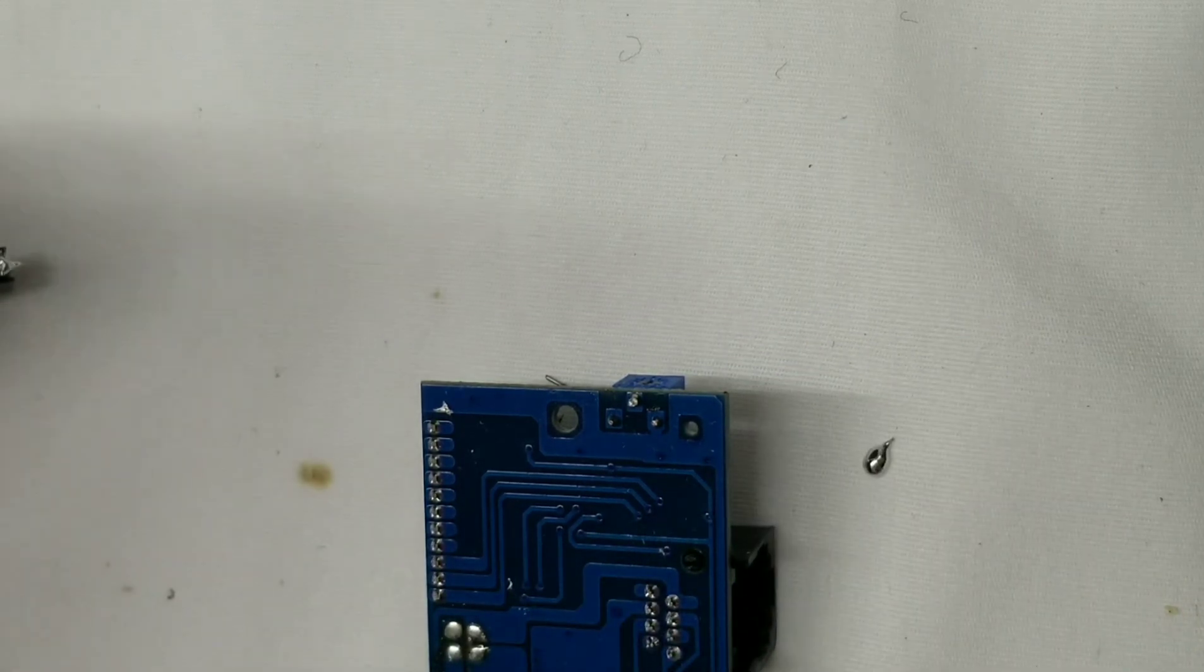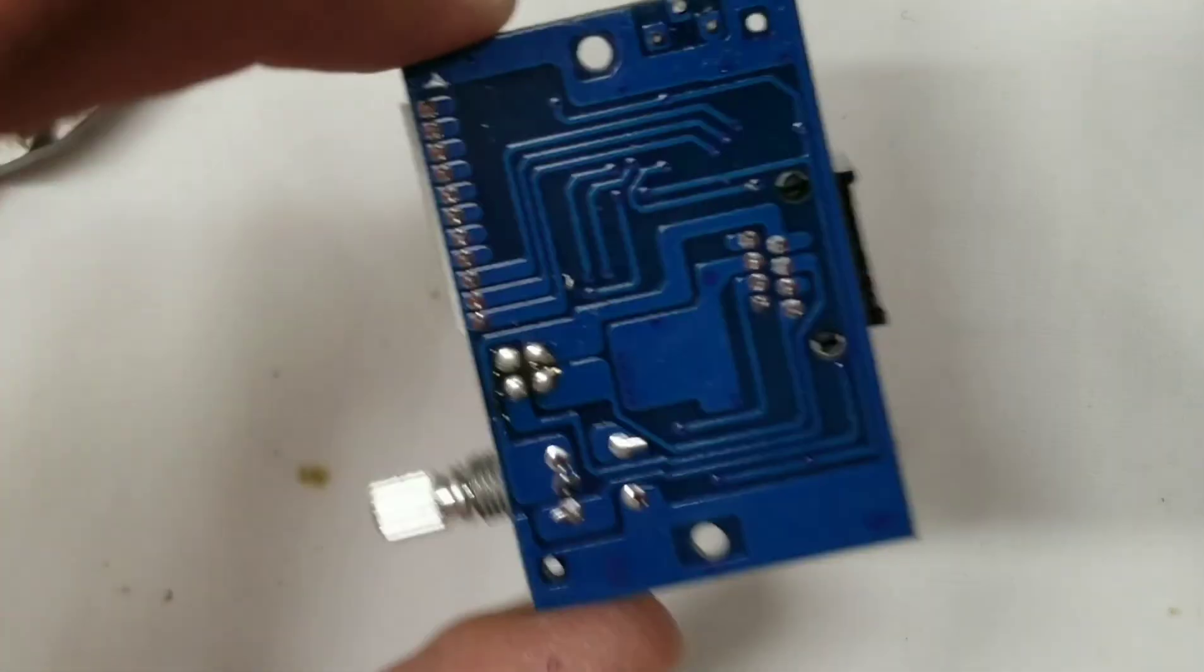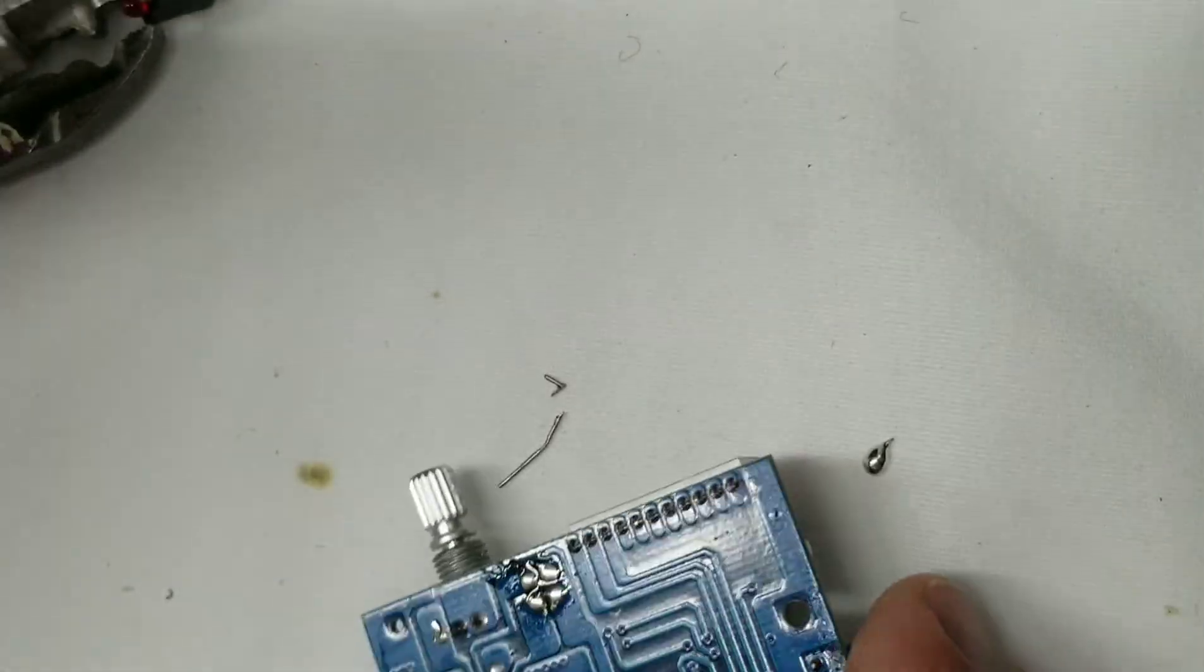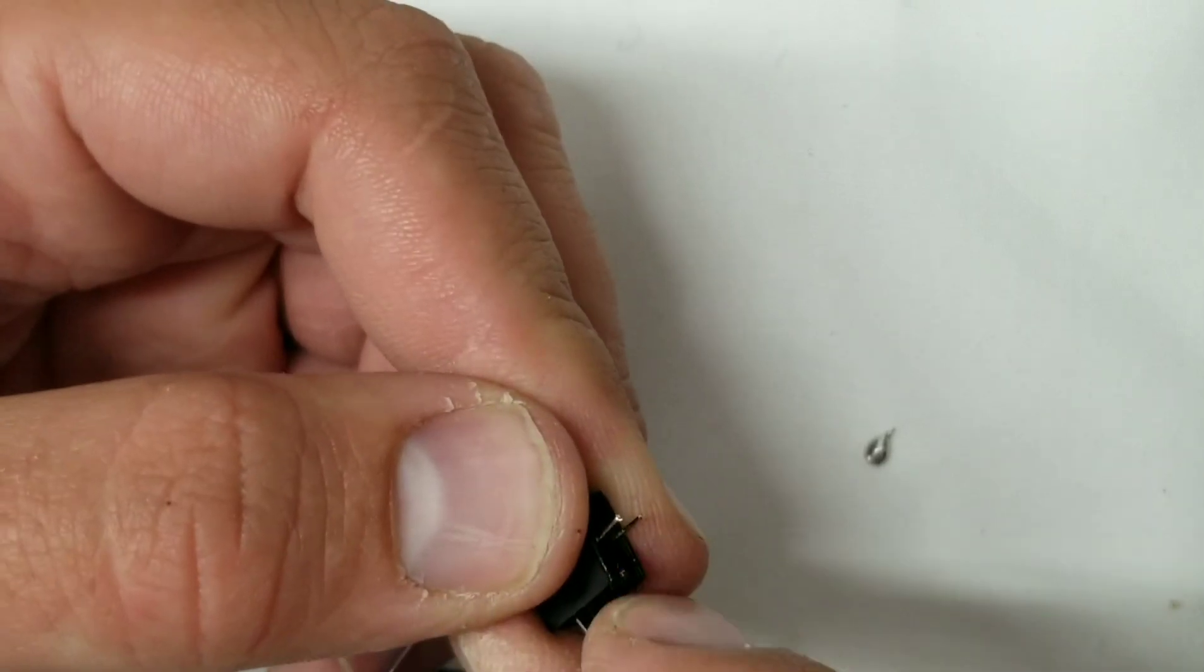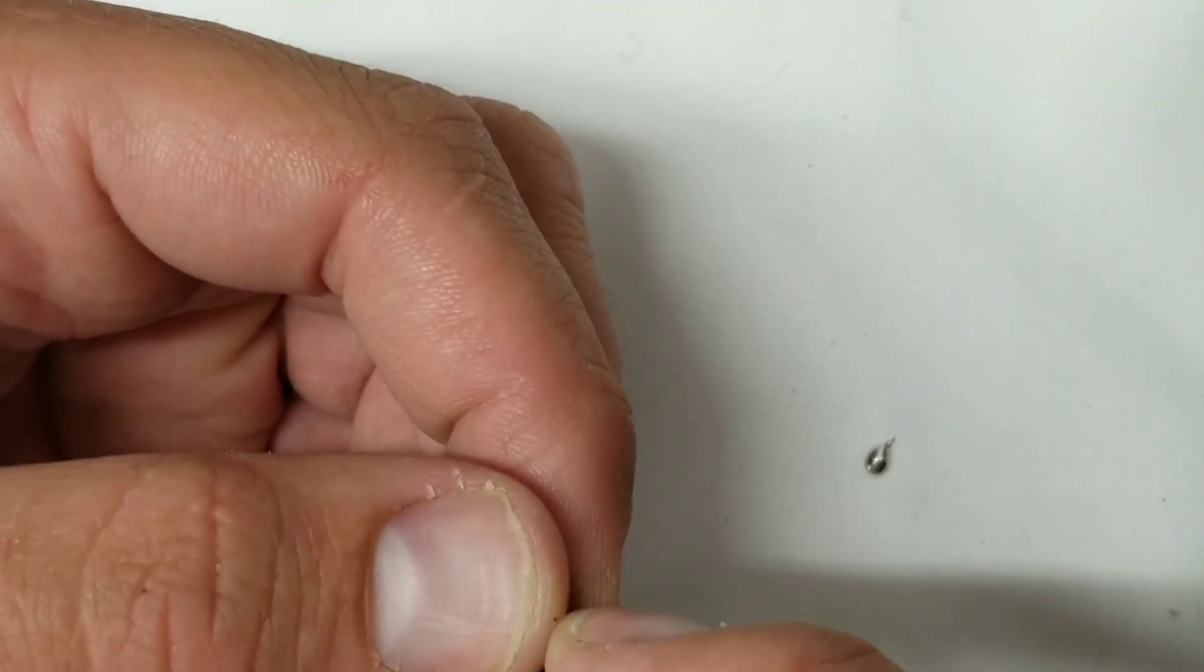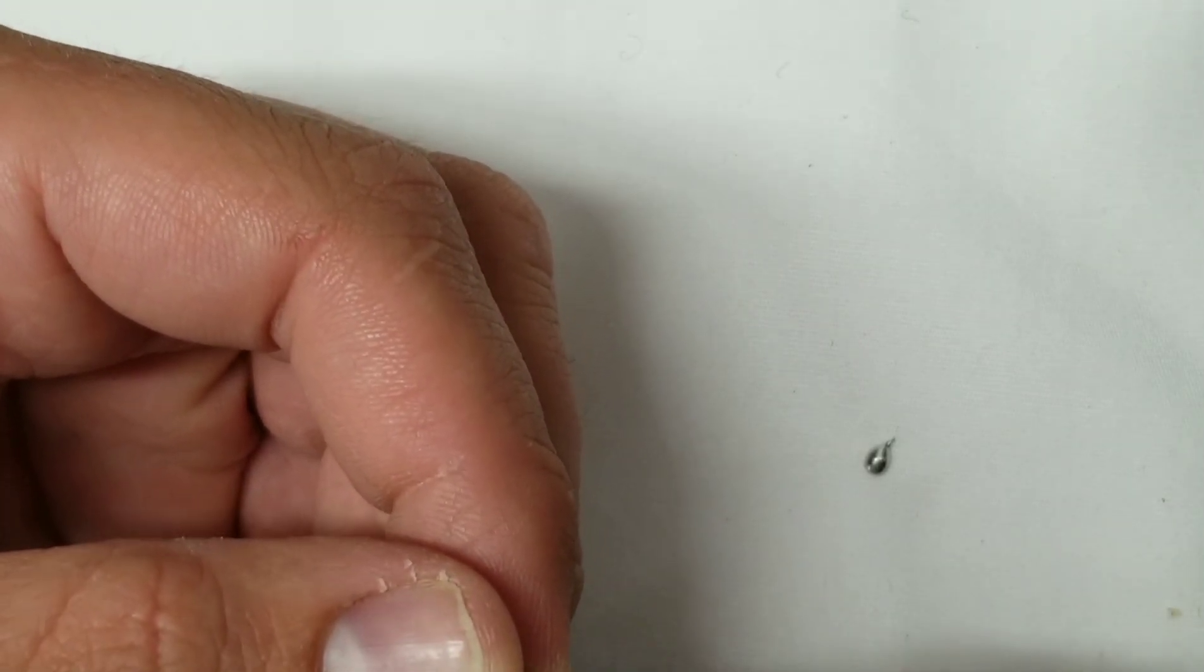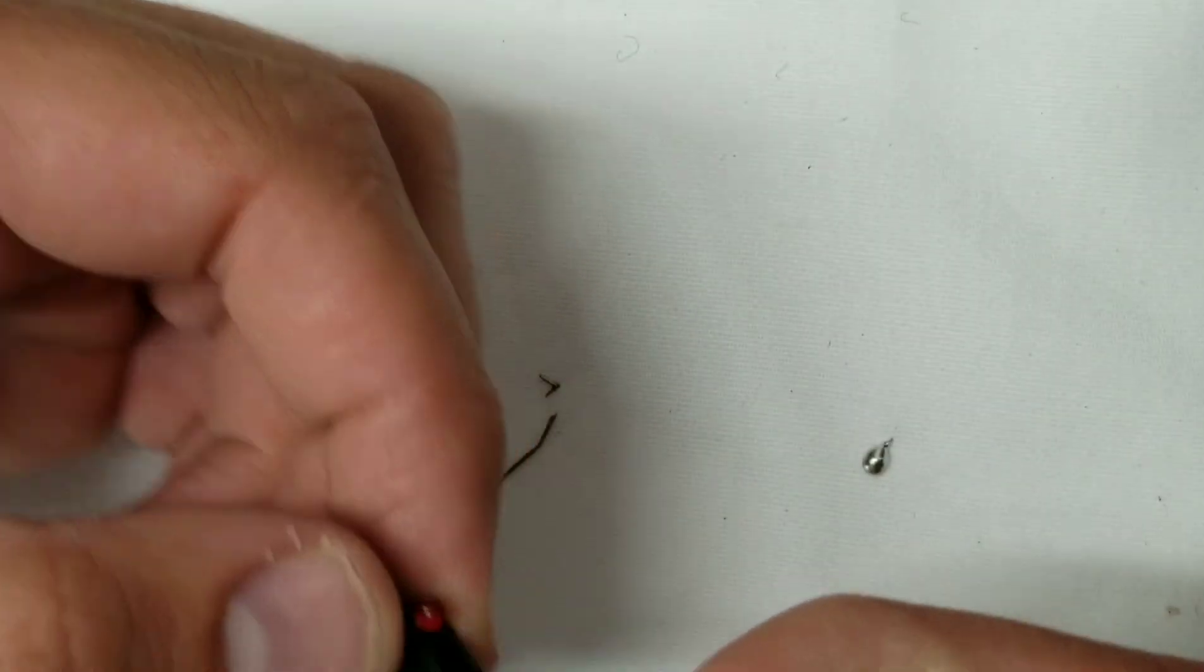Now I'll clean the solder off of this and off of this, and we will have a nice easy piece to work with. Now what we're going to do is bend these legs back for the red and for the blue, and bend them straight. And then you'll see that this LED will come out.